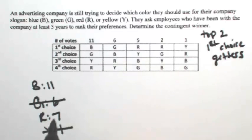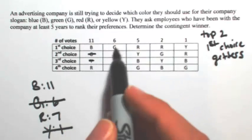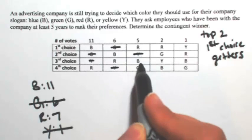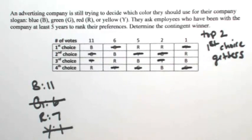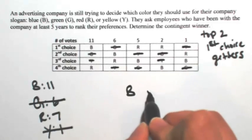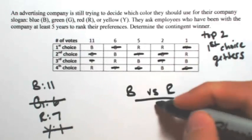So this becomes the competition between B and R. As I go through my list, I'm going to knock out all the G's and the Y's. This becomes B versus R. Whoever wins will be our contingent winner.